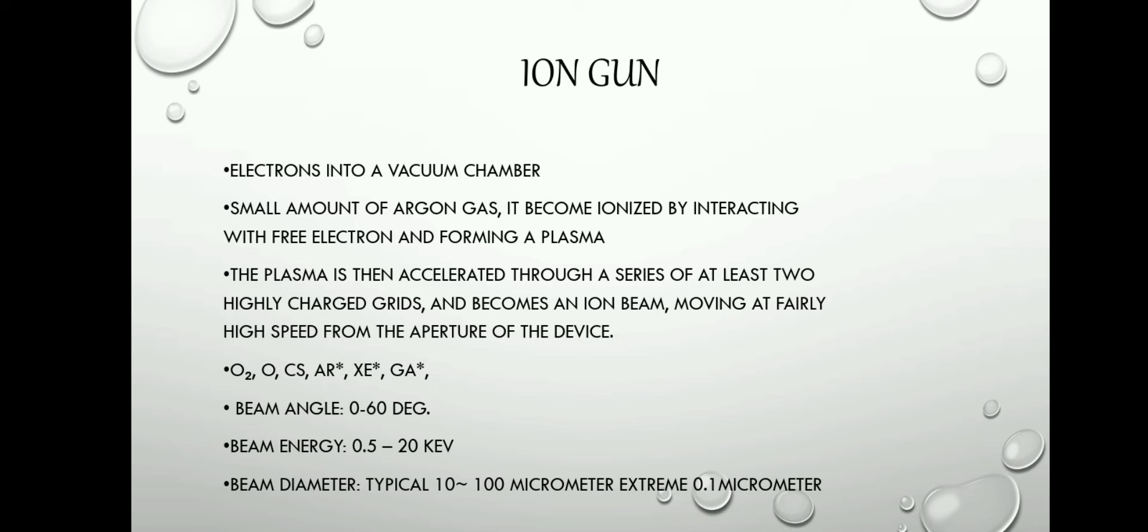Now let me explain about the ion gun. Electrons into a vacuum chamber with a small amount of argon gas become ionized by interacting with free electrons and forming a plasma. The plasma is then accelerated through a series of at least two highly charged grids and becomes an ion beam moving at fairly high speed from the aperture of the device.